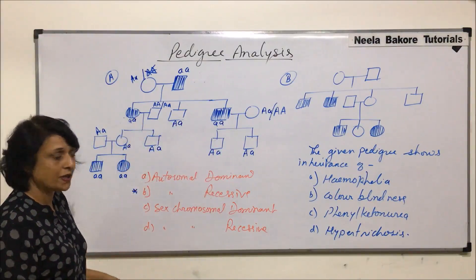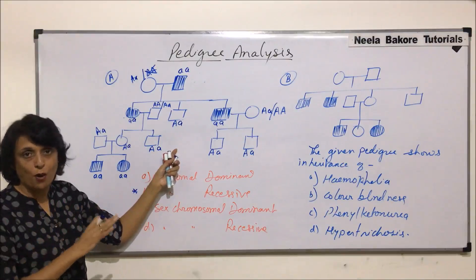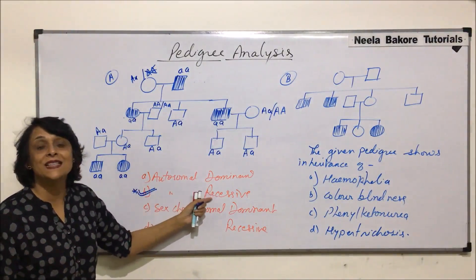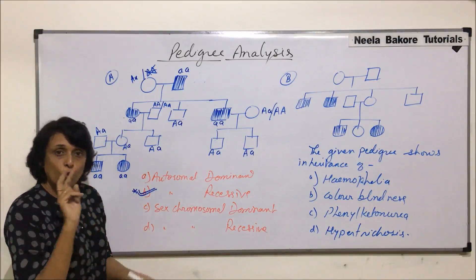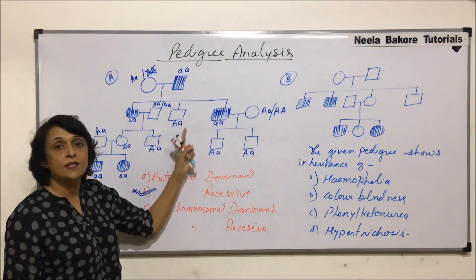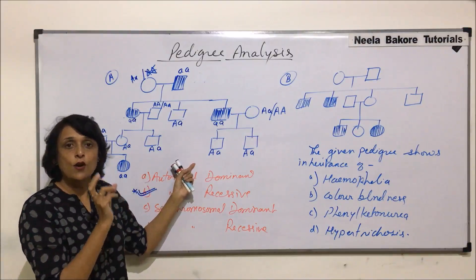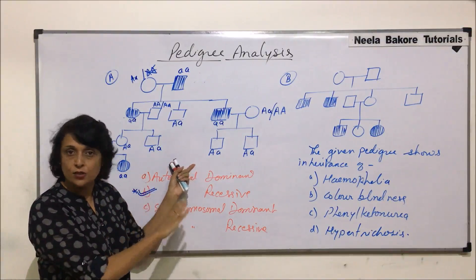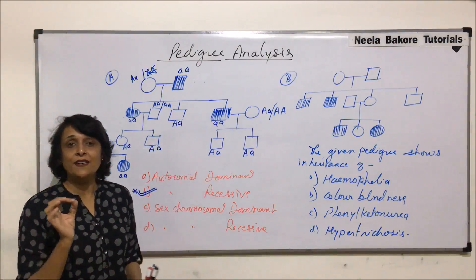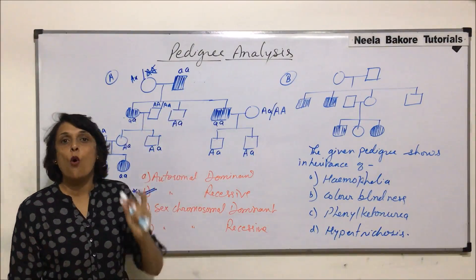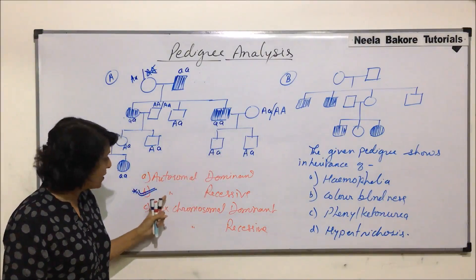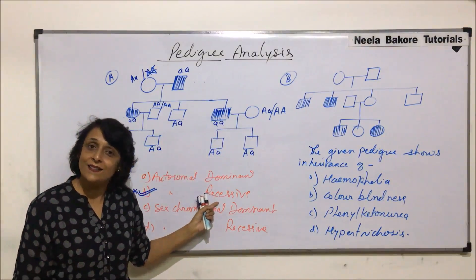From this interpretation, this pedigree represents a typical autosomal recessive inheritance. Two key points to conclude: first, a dominant gene expresses in all generations — which is not the case here. Second, if it were sex-linked and the father is affected, only daughters would be affected, not sons. Therefore, we conclude it is an autosomal recessive disorder.